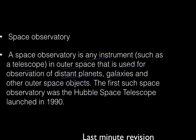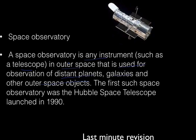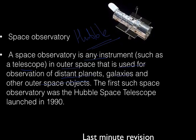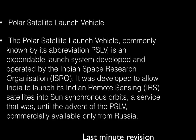The first space observatory was the Hubble Space Telescope, which was launched in 1990. As you can see in this figure, this is the first space shuttle Hubble — it is called the Hubble Telescope — which was launched in 1990.